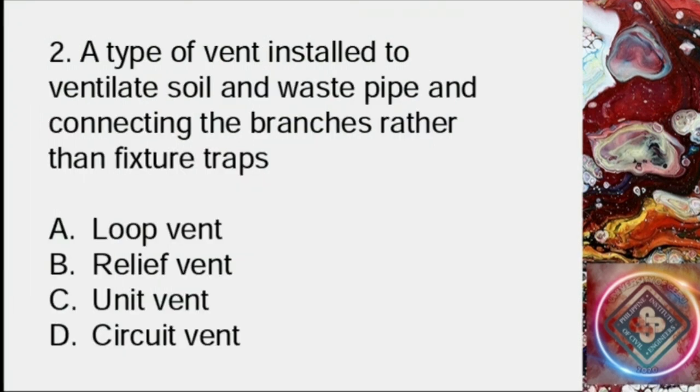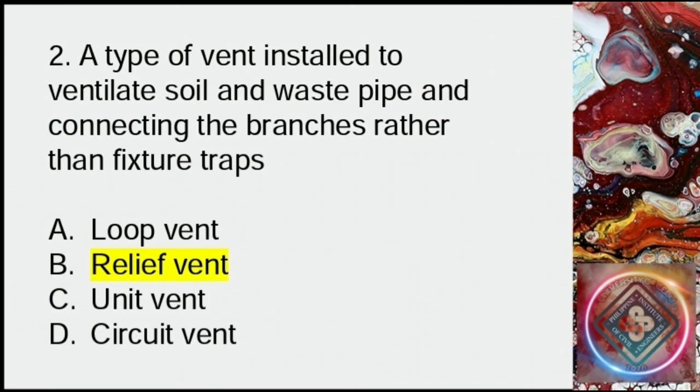Question 2: A type of vent installed to ventilate soil and waste pipe and connecting the branches rather than fixture traps. A: Loop vent, B: Relief vent, C: Unit vent, D: Circuit vent. Answer: B, relief vent.